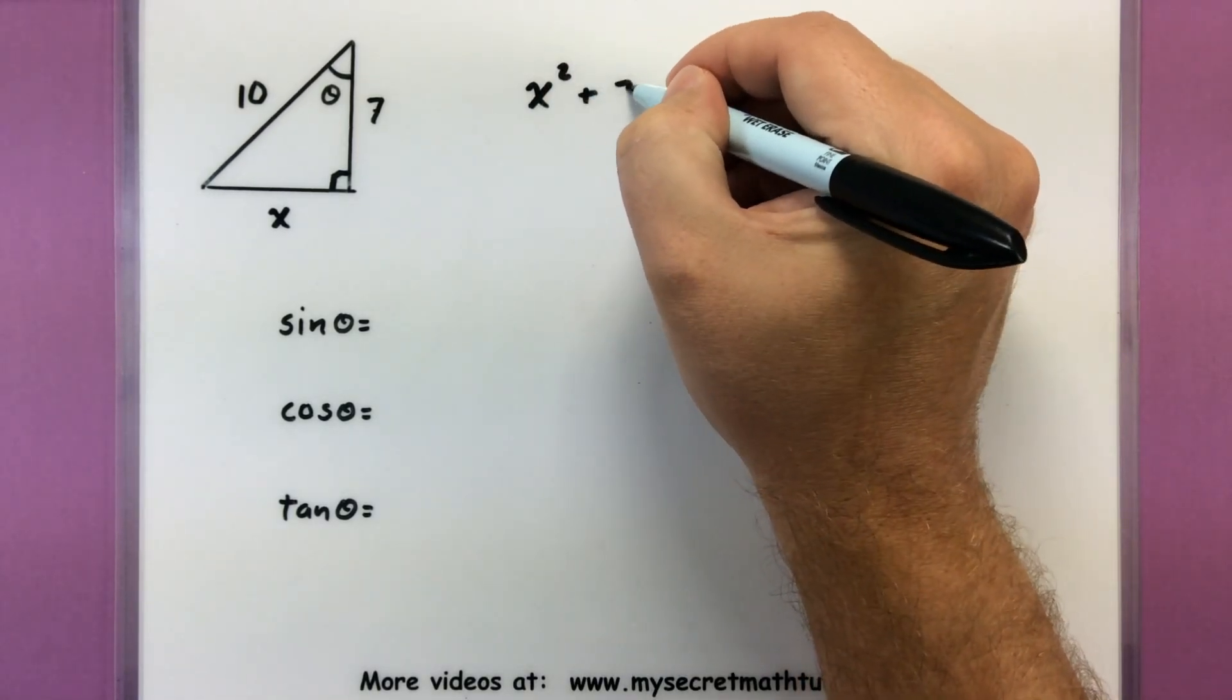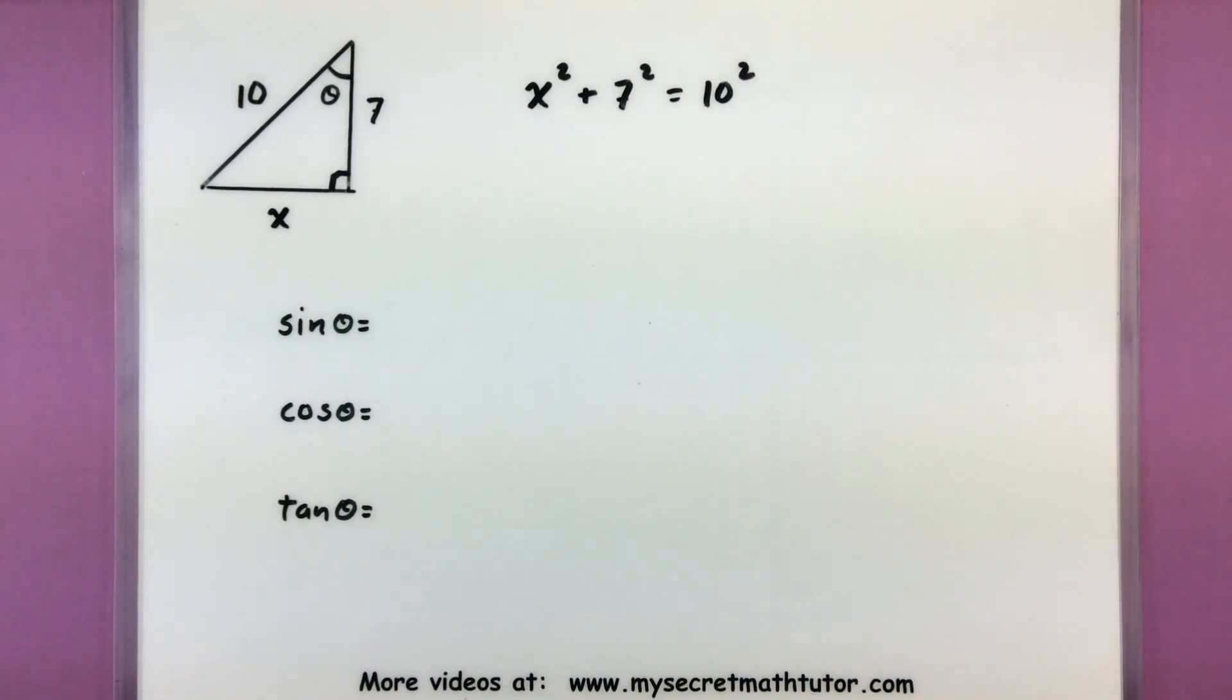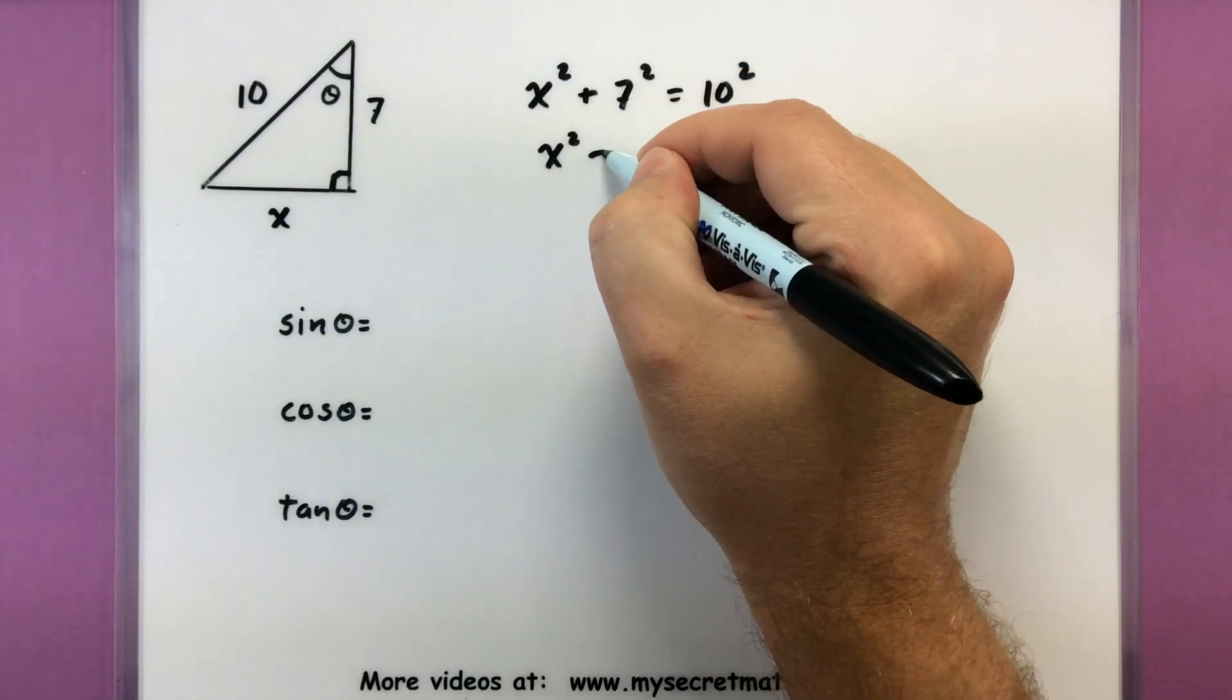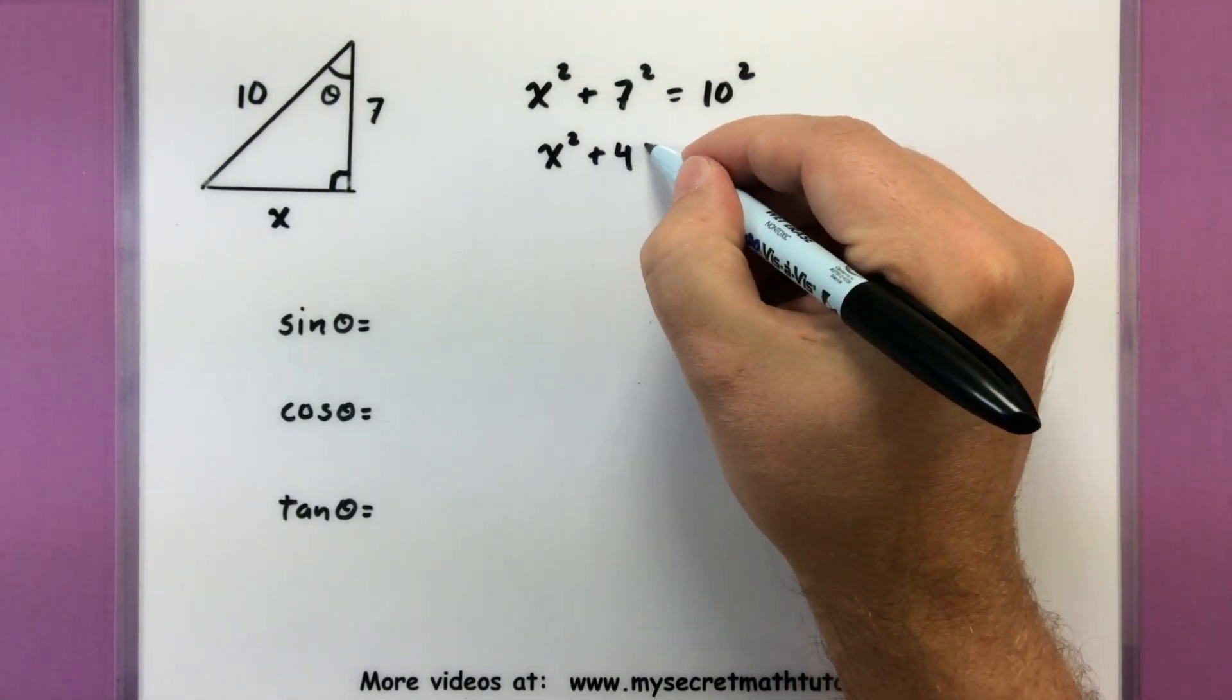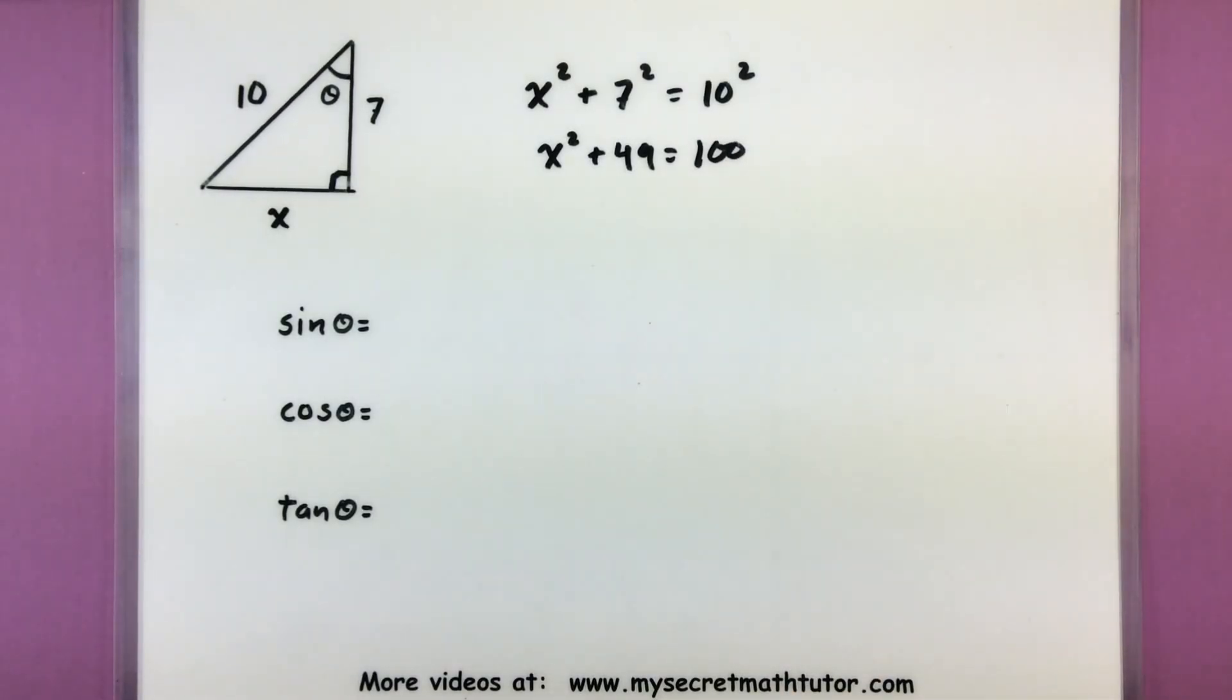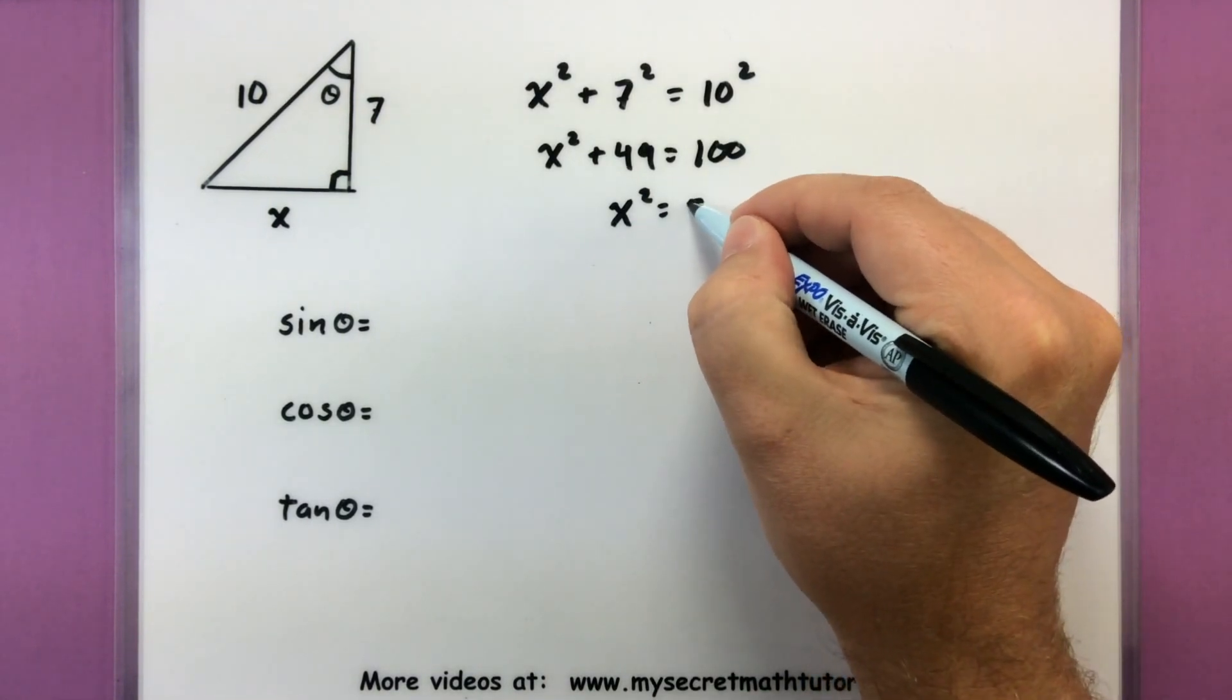So x squared plus seven squared equals our hypotenuse ten squared. Okay, now let's solve this for x. So we need to multiply the seven by itself, so that'll give us forty-nine. Ten squared is one hundred. Subtracting forty-nine from both sides, that'll give us fifty-one.